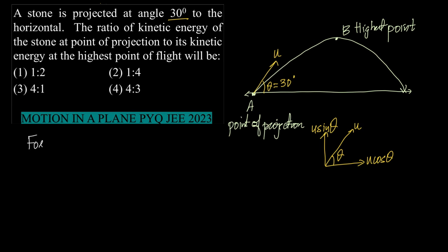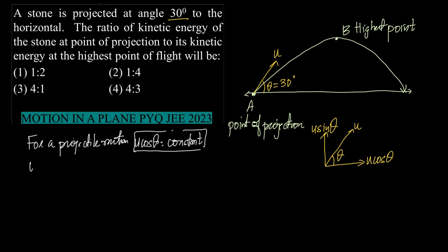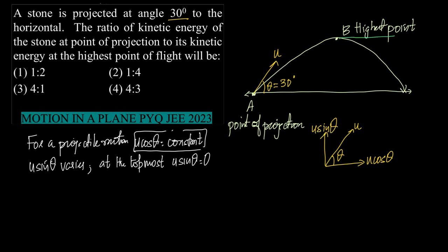We know that for projectile motion, the u cos theta component remains constant. The u sin theta component varies, and at the topmost point, the u sin theta component is equal to zero. So the only velocity acting at the highest point is u cos theta; u sin theta vanishes.